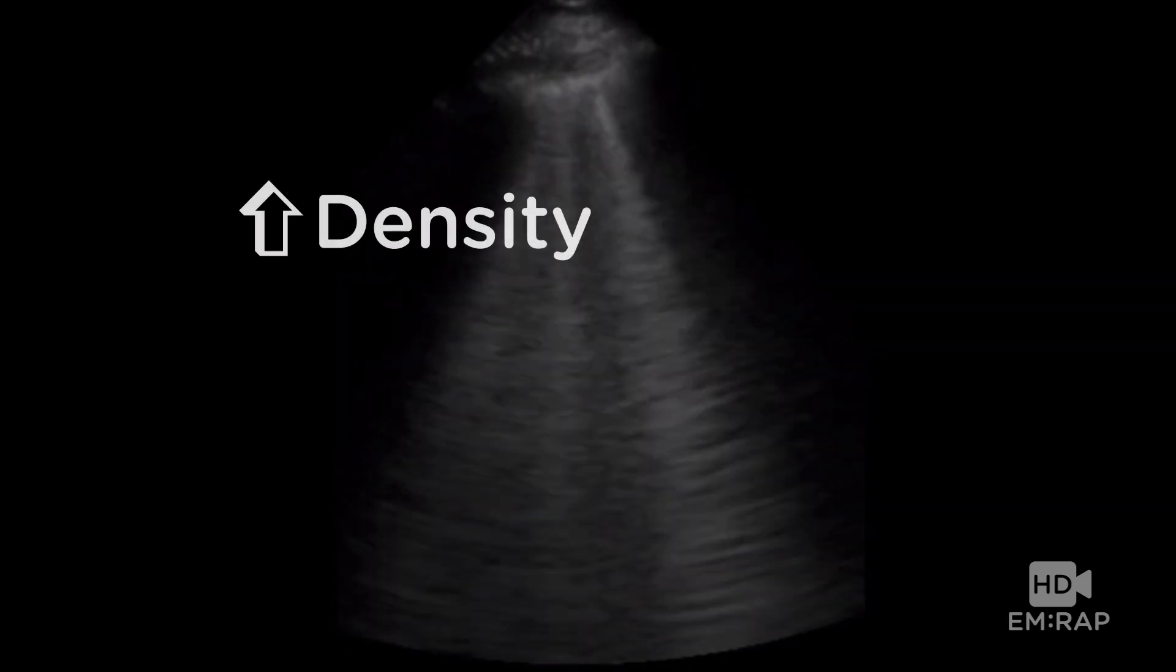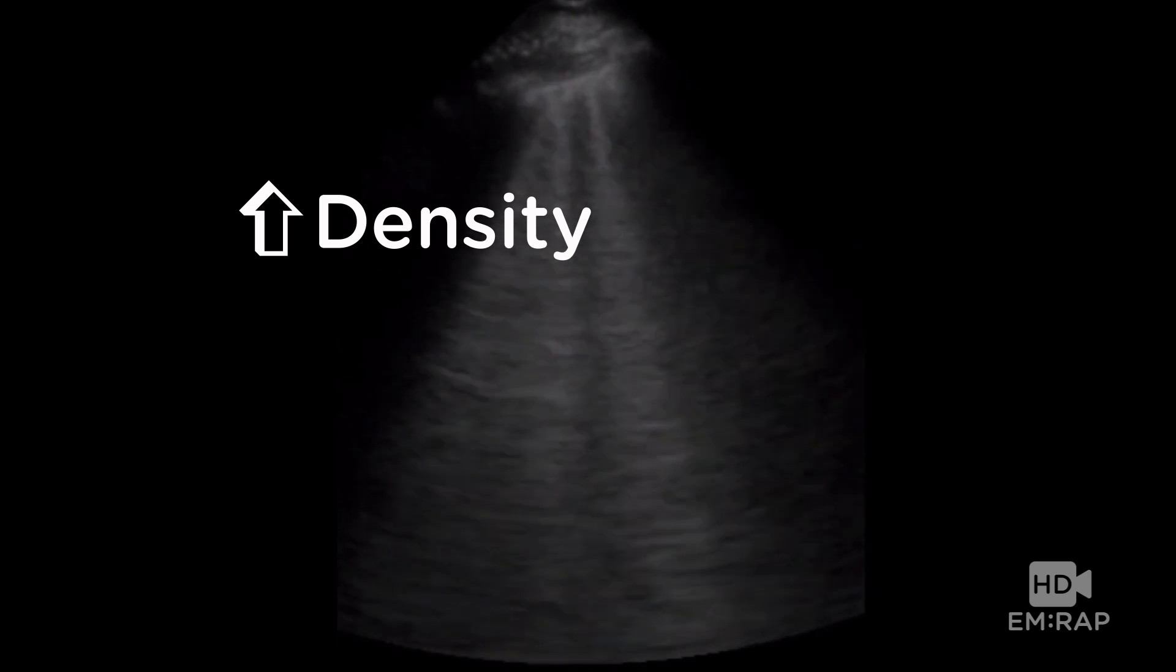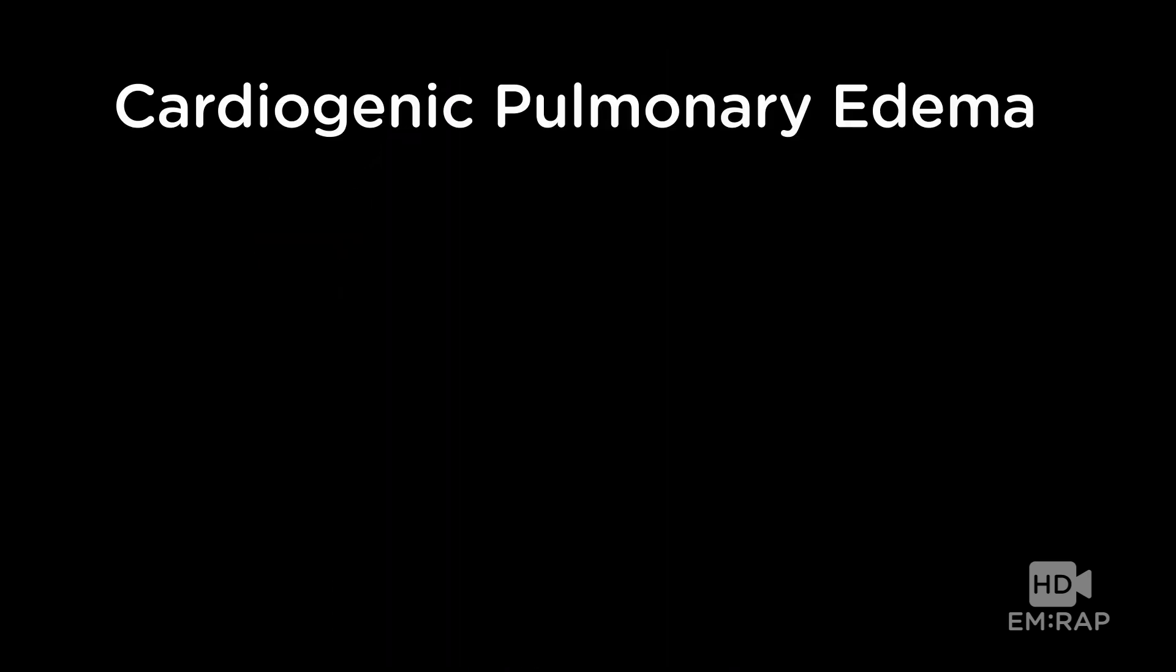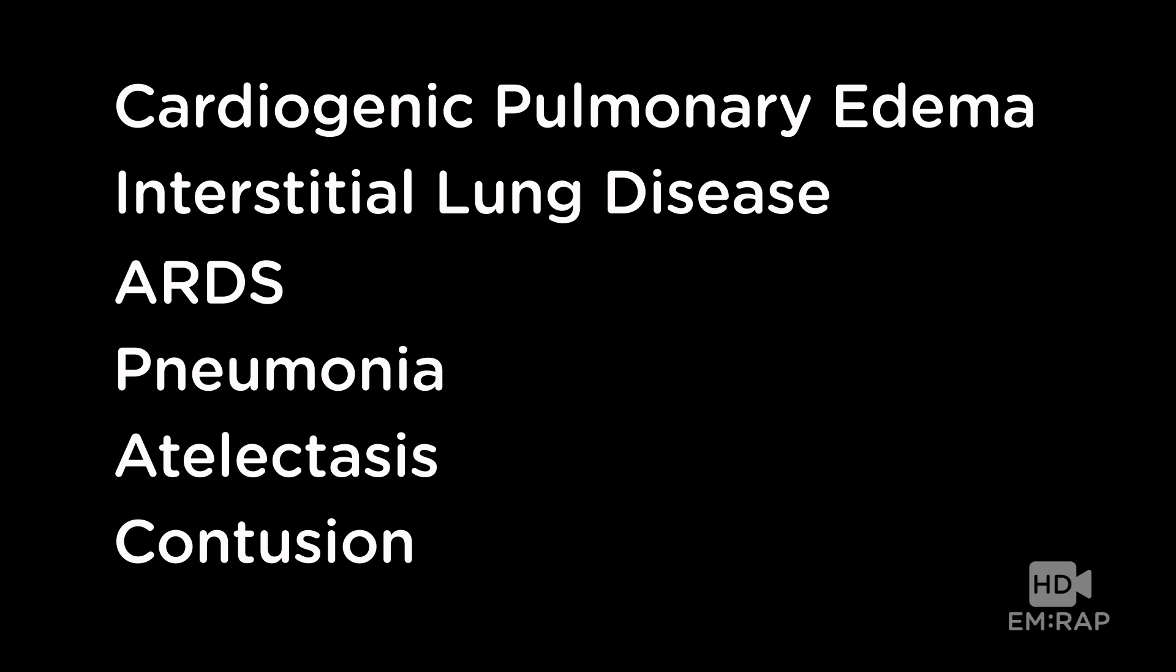Now the thing that I have to mention here is that the presence of a positive zone doesn't necessarily mean that the patient has cardiogenic pulmonary edema. B lines technically are caused by any kind of increase in density in the lungs. Increase in density definitely happens with cardiogenic pulmonary edema. The lungs get soggy, but you can also have that with interstitial lung disease, ARDS, pneumonia, atelectasis, pulmonary contusions. All these things can cause B lines. So you have to make sure to look at the patient in front of you and don't use that ultrasound in isolation.